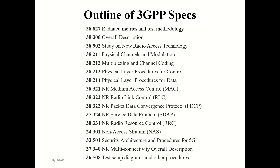For example, spec 38827 covers radiated metrics and test methodologies. Spec 38300 gives an overall description of 5G. Spec 38902 is a study on new radio access technology. Spec 38211 covers physical channels and modulation schemes — how the modulation scheme works and channel behavior. When you read one spec, it will refer to multiple other specs, giving you the full picture.